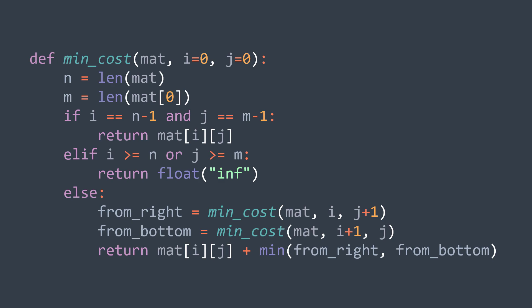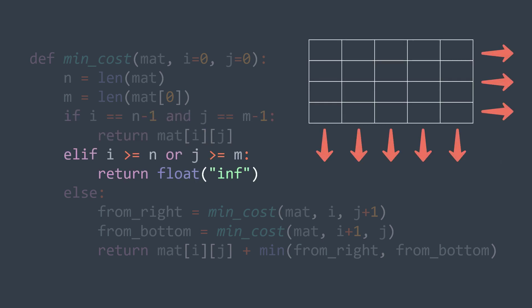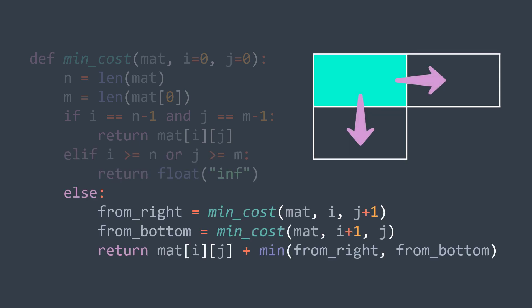We end up with a recursive function with two base cases. The first is when we're at the bottom-right cell: the cost to go from the bottom-right cell to itself is just its own value, so we return it. The second base case is when we go out of the matrix — we return infinity, meaning we can't reach the bottom-right cell from there. In the recursive case, we return the cost of the current cell plus the minimum between going right (calling the function with i, j+1) and going down (calling the function with i+1, j), where i and j are the coordinates of the current cell.